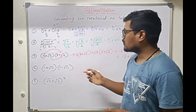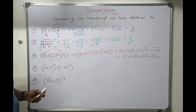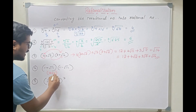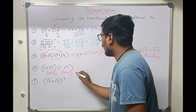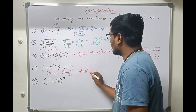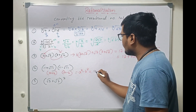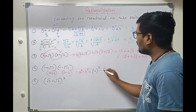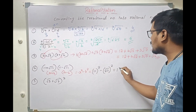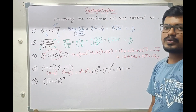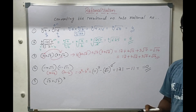The final answer is 12 plus 4 root 2 plus 3 root 7 plus root 14. Since all terms are unlike, we cannot simplify further. For the next type, we have 11 plus root 11 multiplied by 11 minus root 11. This is in the form of a plus b and a minus b, so we use the formula a squared minus b squared. That gives 11 squared minus root 11 whole square, which is 121 minus 11, equal to 110.